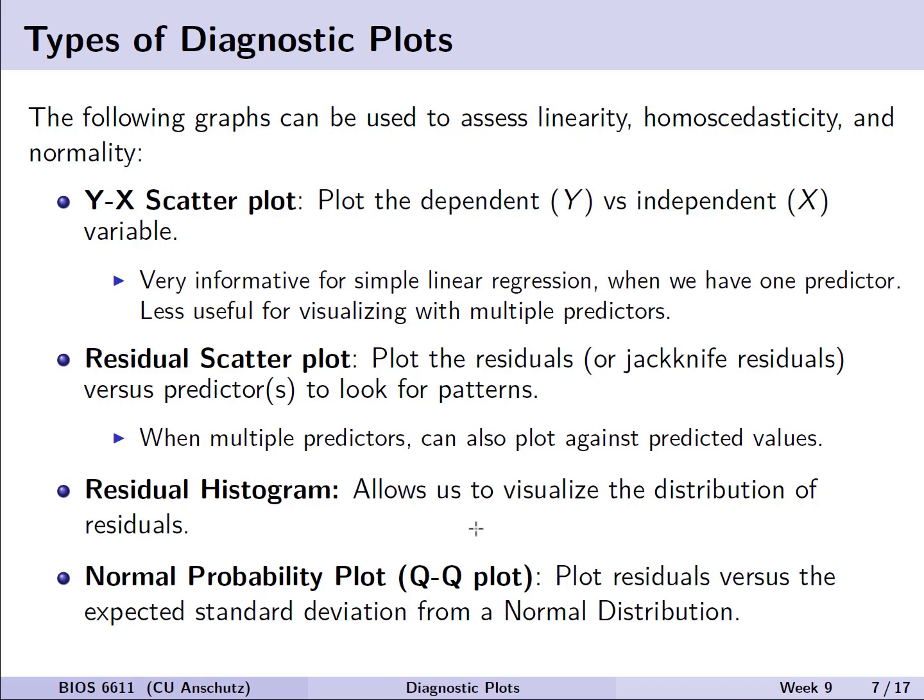We'll look at the residual scatter plot — plotting the residuals, or potentially the jackknife residuals, versus our predictor or predictors to look for potential patterns. When there are multiple predictors, we can also plot against the predicted values, or the y-hats. We'll examine the residual histogram, which allows us to visualize the distribution of the residuals. And we'll also see what a normal probability or Q-Q plot looks like, where we plot the residuals versus the expected standard deviation from a normal distribution.